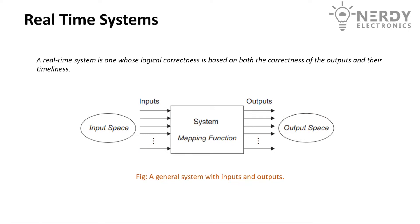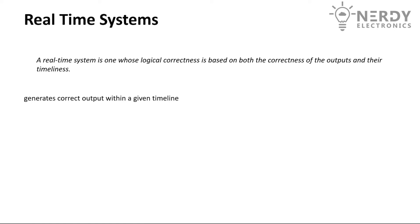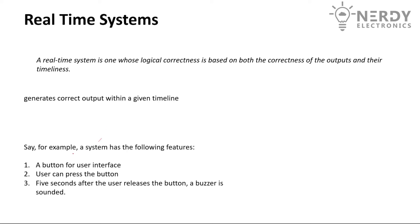Now let us see what real-time systems are. A real-time system is one whose logical correctness is based on both the correctness of the output and the timeliness. The output has to be correct, but also it has to be timely — there has to be a defined timeline within which we need to get an output. If a system can assure us a correct output within this defined time, that system can be classified as a real-time system. It does not necessarily mean fast — it only means that whatever the agreed timeline is, that timeline is met.